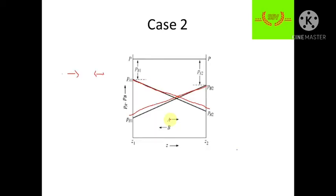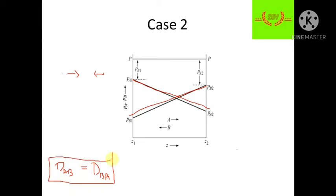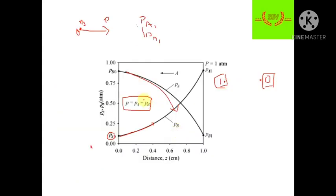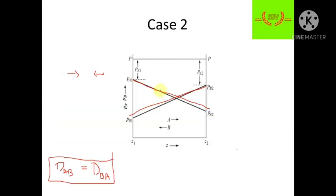An important point to remember: diffusivity D_AB always equals D_BA. That is, the diffusivity of A in B is always equal to the diffusivity of B in A, in any case.